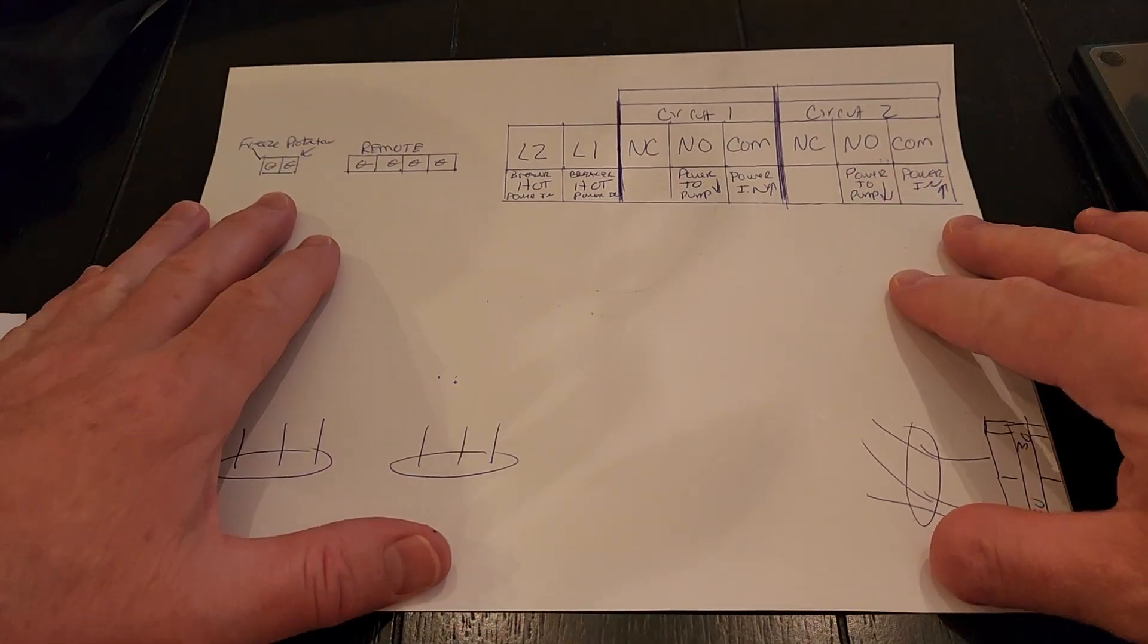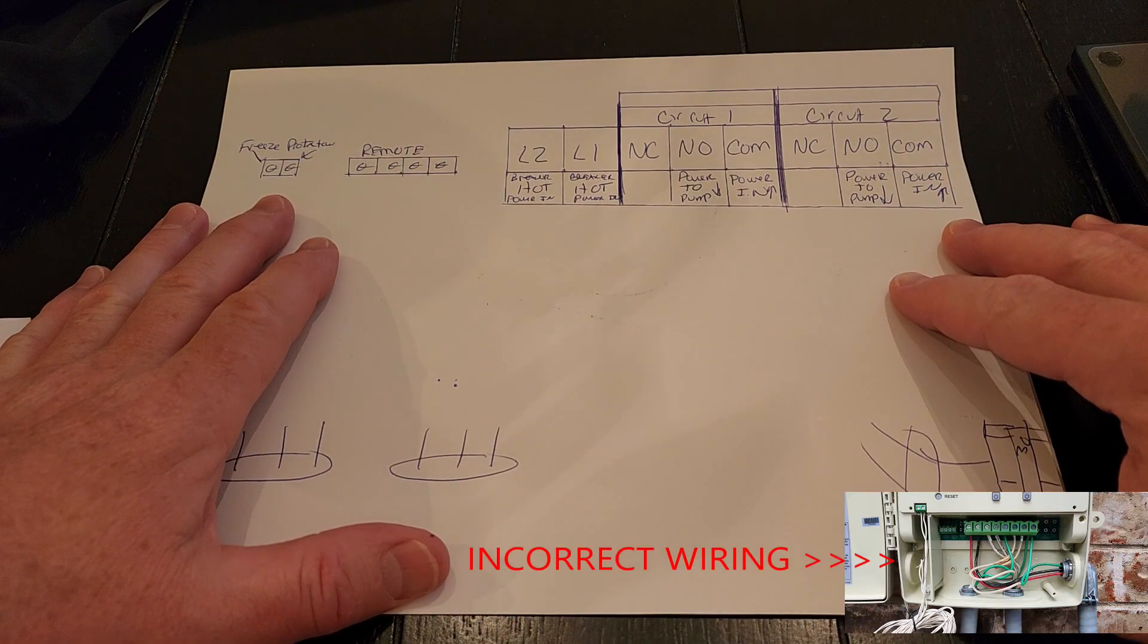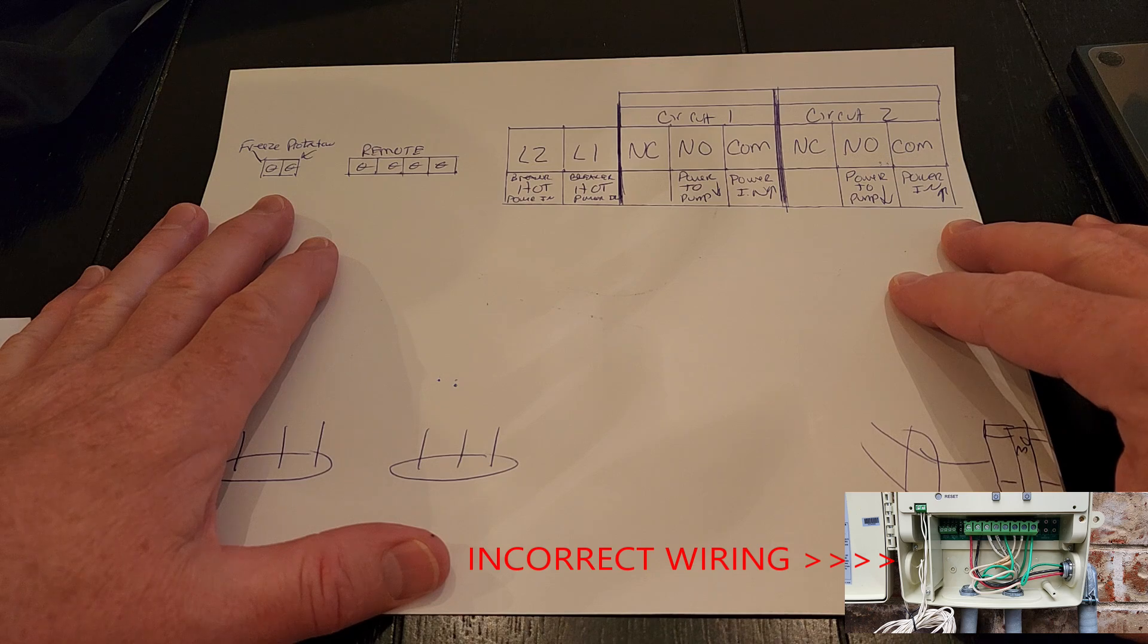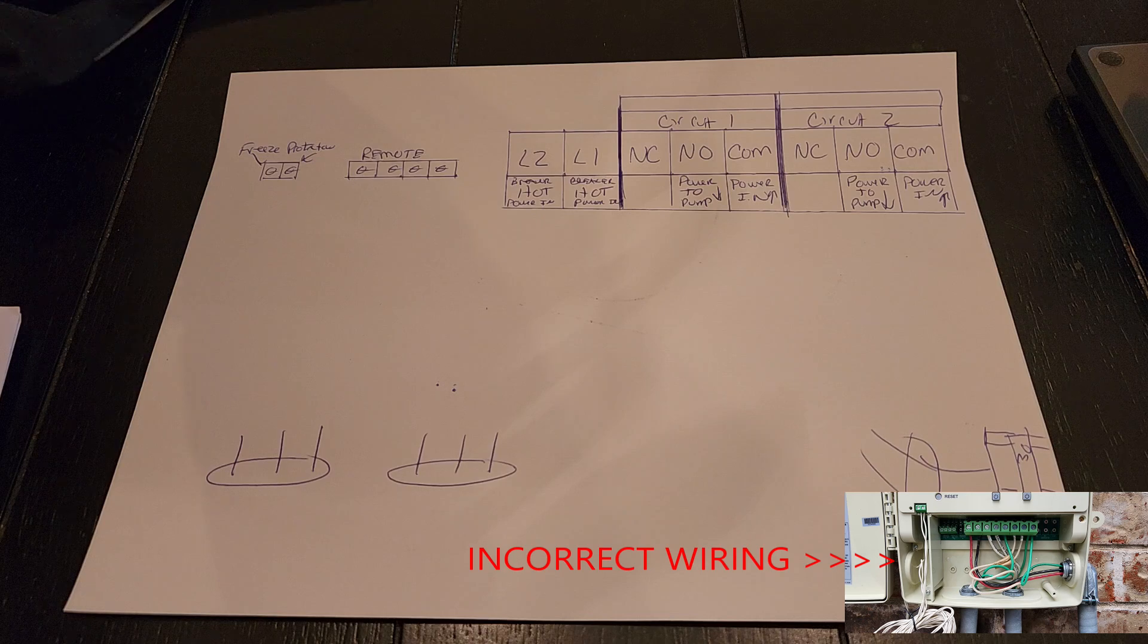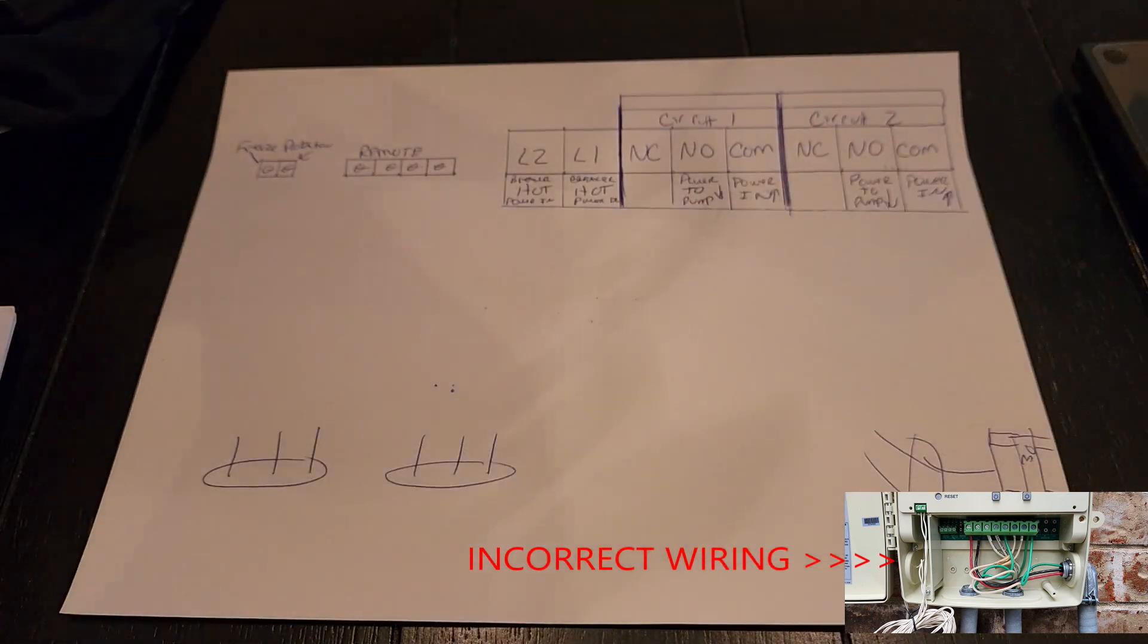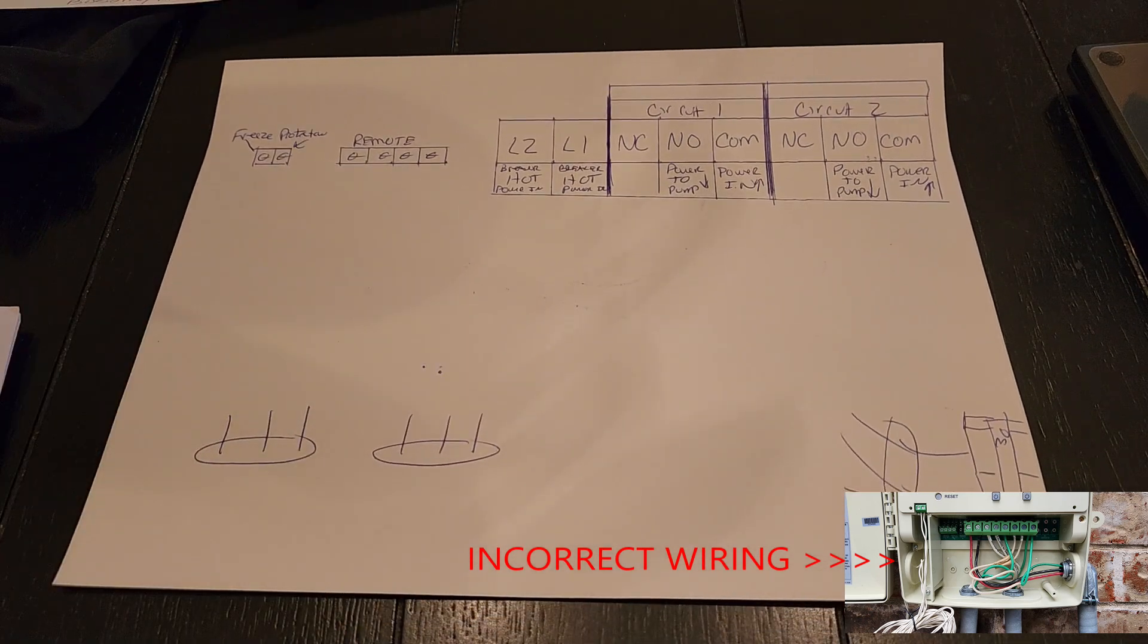So I'm going to attempt to draw the schematic out that Ken helped me do via the telephone after I wired it the wrong way. I'll put the wrong wiring in the little box down there so you can see what I did wrong. So I have a secondary schematic I've already drawn out here, so I can copy it. It's not very easy.